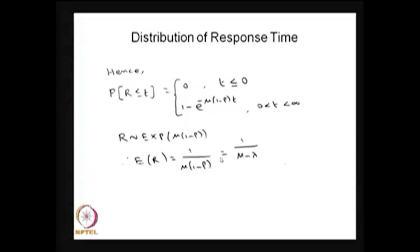This is the same result obtained earlier from Little's Law using the known value of lambda and the expected number in the system. So here we first find the distribution of the time spent in the system (the response time) and then derive the average time, which agrees with the Little's Law result.